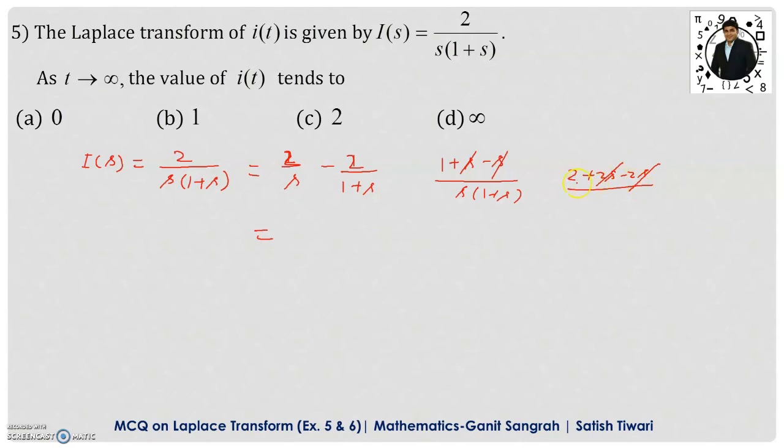It will be 2 plus 2s minus 2s and that denominator is same. This 2s get cancelled. We are left with the 2 here. Then this is the required partial fraction. Just take the inverse Laplace transformation, you will get the i(t) function. 2 is constant. Inverse Laplace transformation of 1 by s is 1 minus 2. The inverse Laplace transformation of 1 upon 1 plus s is e to the power minus t.